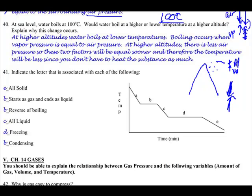So if you're up top, fewer particles, lower atmospheric pressure, less energy you need to give it to get that vapor pressure to finally meet, and then it'll boil. So at higher altitudes, it'll boil at lower temperatures because it doesn't need as much energy.